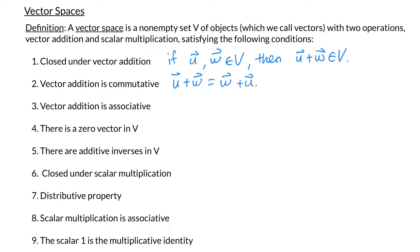Property 3 says that vector addition is associative. That means if I have a sum of three vectors and I first add u and v and then add w, that's the same as adding u to the sum of v plus w.